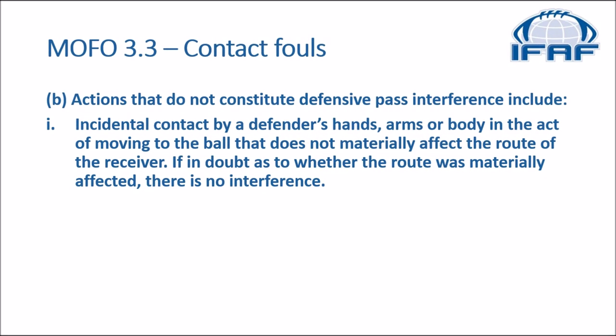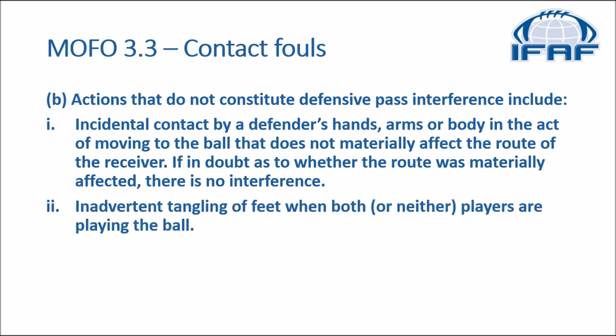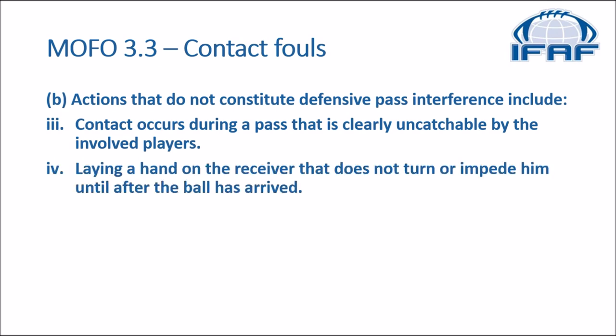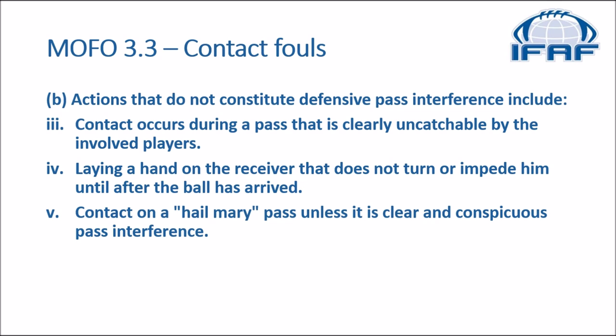Actions that do not constitute defensive pass interference include: one, incidental contact by a defender's hands, arms, or body in the act of moving to the ball that does not materially affect the route of the receiver — if in doubt as to whether the route was materially affected, there is no interference. Two, inadvertent tangling of feet when both or neither players are playing the ball. Three, contact that occurs during a pass that is clearly uncatchable by the involved players. Four, laying a hand on the receiver that does not turn or impede him until after the ball has arrived. Five, contact on a Hail Mary pass unless it is clear and conspicuous pass interference.